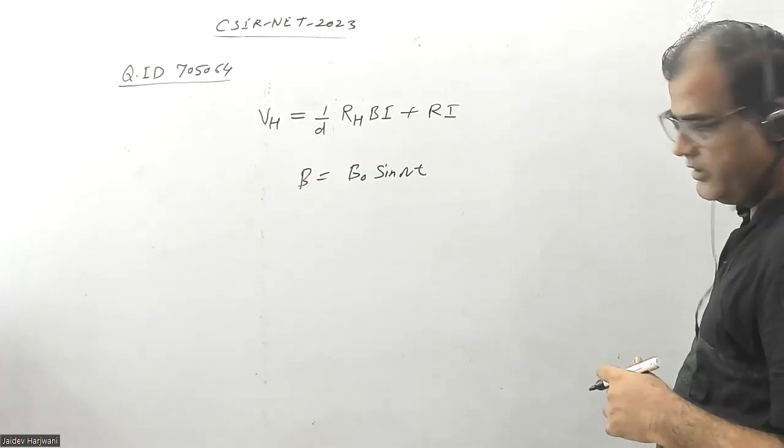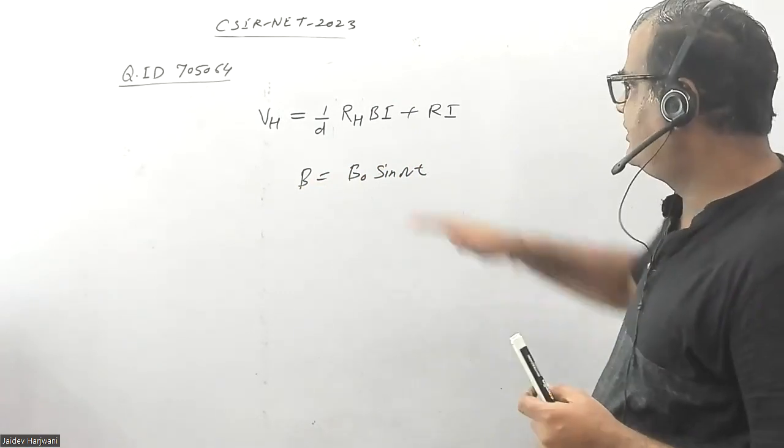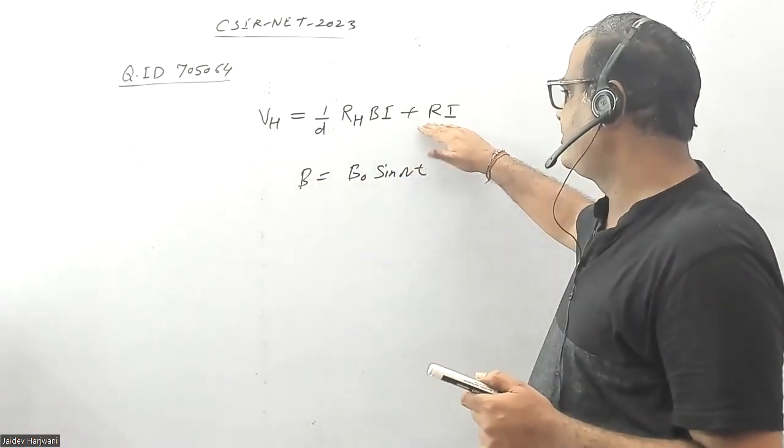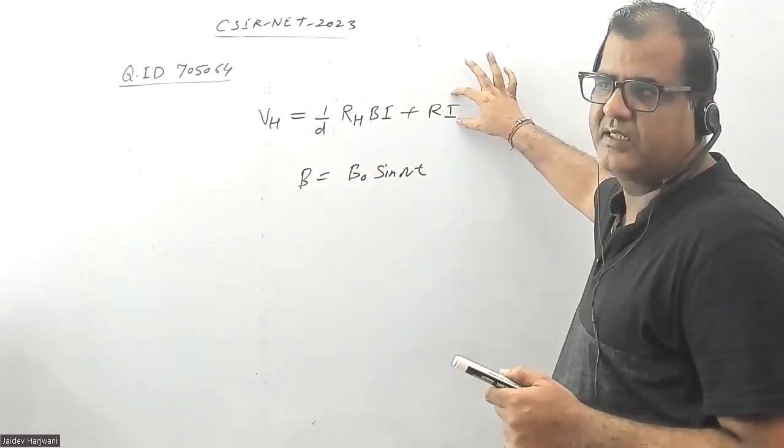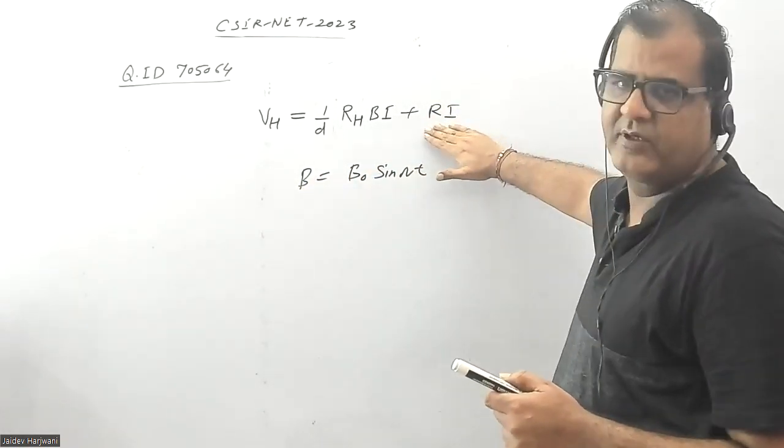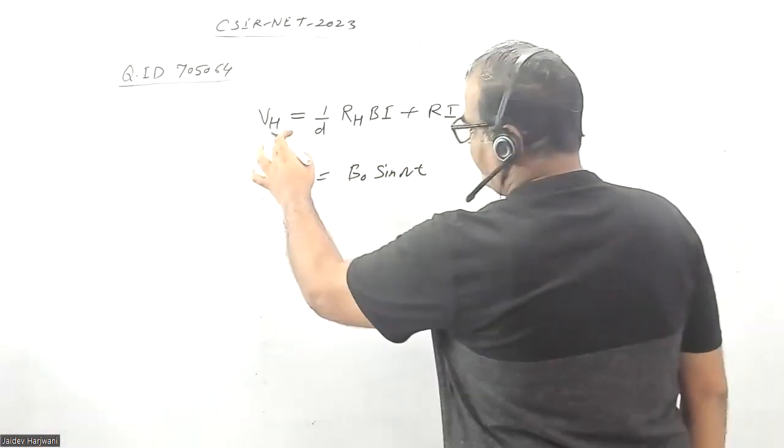With a lock-in amplifier, you can easily remove the DC part. When you apply an AC magnetic field, the offset part remains DC and can be eliminated using the lock-in amplifier.